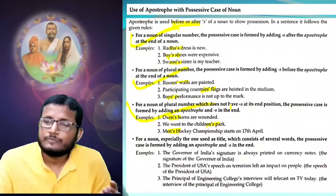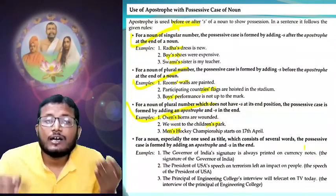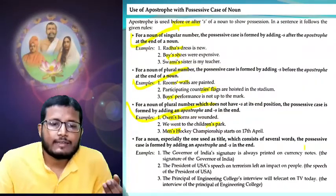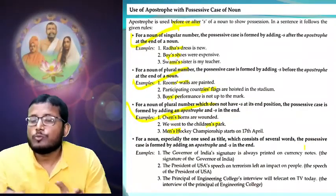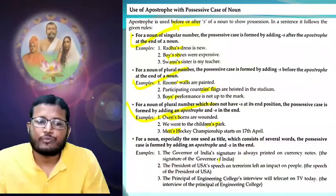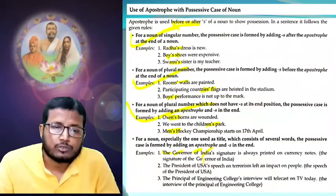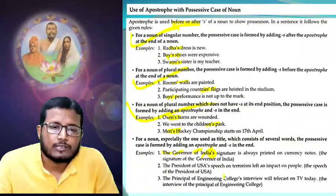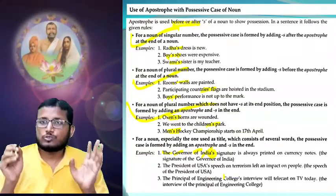For foreign nouns, especially those used as titles — for example the title of a book — which consist of several words, the possessive case is formed by adding an apostrophe and S at the end. The last word will carry the apostrophe. For example: 'The Governor of India' — there are four words; the last word is India, so India takes the apostrophe: 'The Governor of India's'.